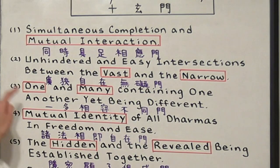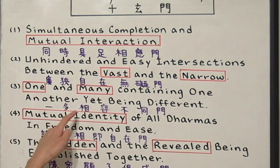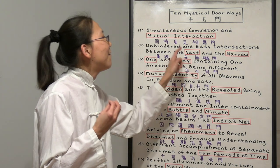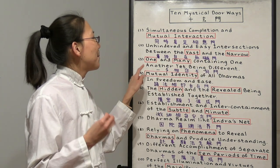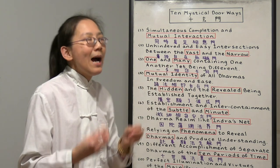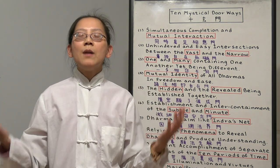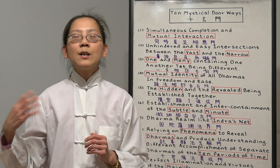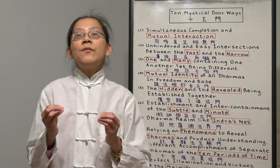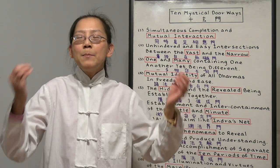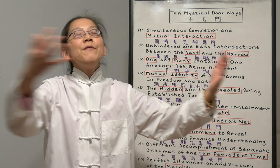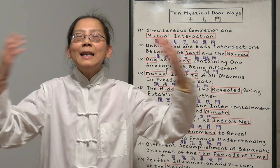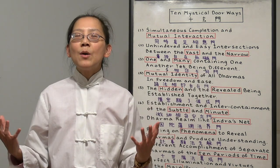Number three is one and many containing one another, yet being different. So number two is comparing the vast and the narrow. Now it's comparing one and many. One and many is the same in the world of the Buddha. Just like in the Samantabhadra Bodhisattva's Ten Great Vows, his one body will manifest into infinite bodies and every single body will be in front of infinite Buddhas. He made one prostration, one bow. He's bowing to infinite Buddha because this is the power of our mind.